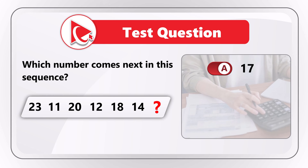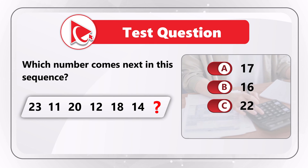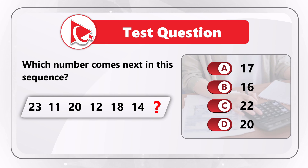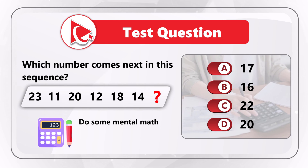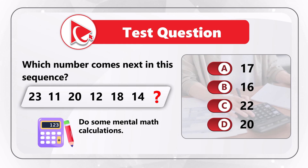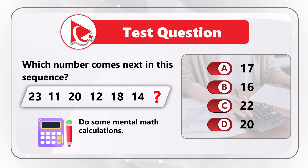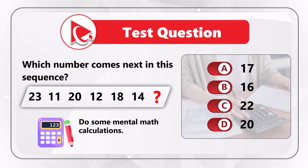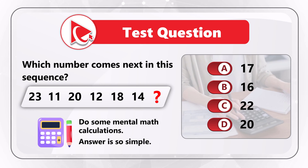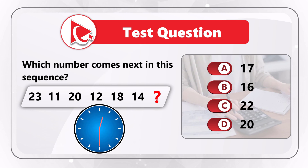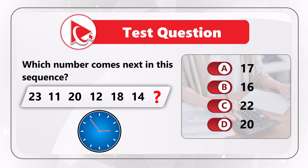The choices are: choice A 17, choice B 16, choice C 22, and last but not least choice D 20. Take a close look — maybe do some mental math calculations to see if you can come up with the answer. Seems unsolvable, isn't it? But be sure that the answer will look so simple as soon as I reveal it, just like a magic trick. Maybe give yourself an additional 15 to 20 seconds.